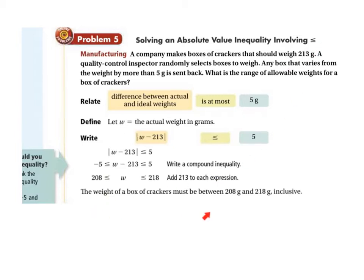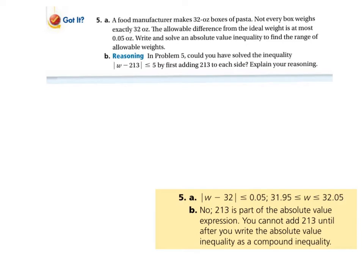So, again, I know you can do this in your head, but that's not the ideal. This problem is extremely similar to the last one. Again, the absolute value we're going to write is, so we have an ideal weight of 32 this time. So, food manufacturer makes 32 ounces of boxes of pasta. Not every box weighs exactly 32 ounces. The allowable difference from the ideal weight is at most 0.05 ounces. So, 0.05 ounces. Write and solve an absolute value inequality to find the range of allowable weights.